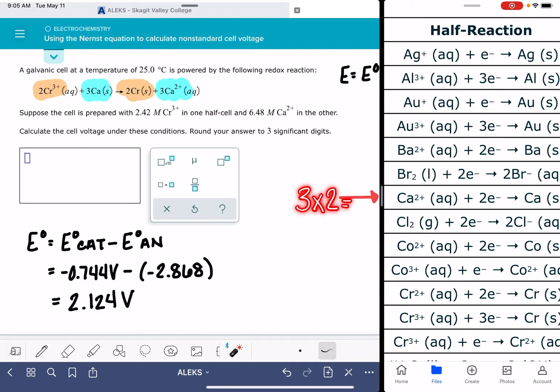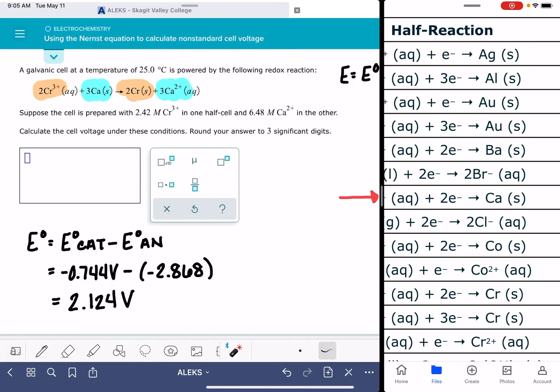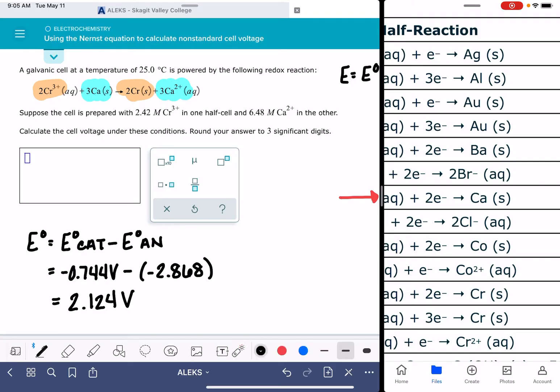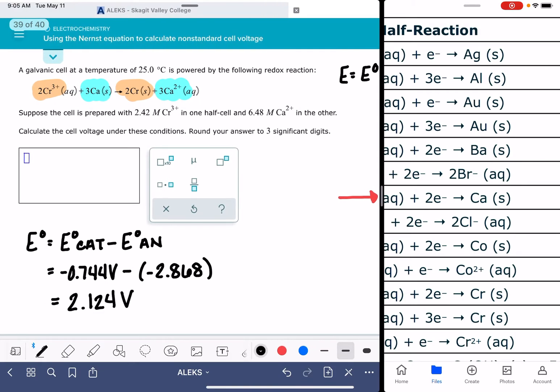And that means that we need to do that for the number of electrons as well. So that means we don't have two electrons like it says in this equation, we actually have 6. So we're going to make a note of that right here, that n is equal to 6, the number of electrons being exchanged.